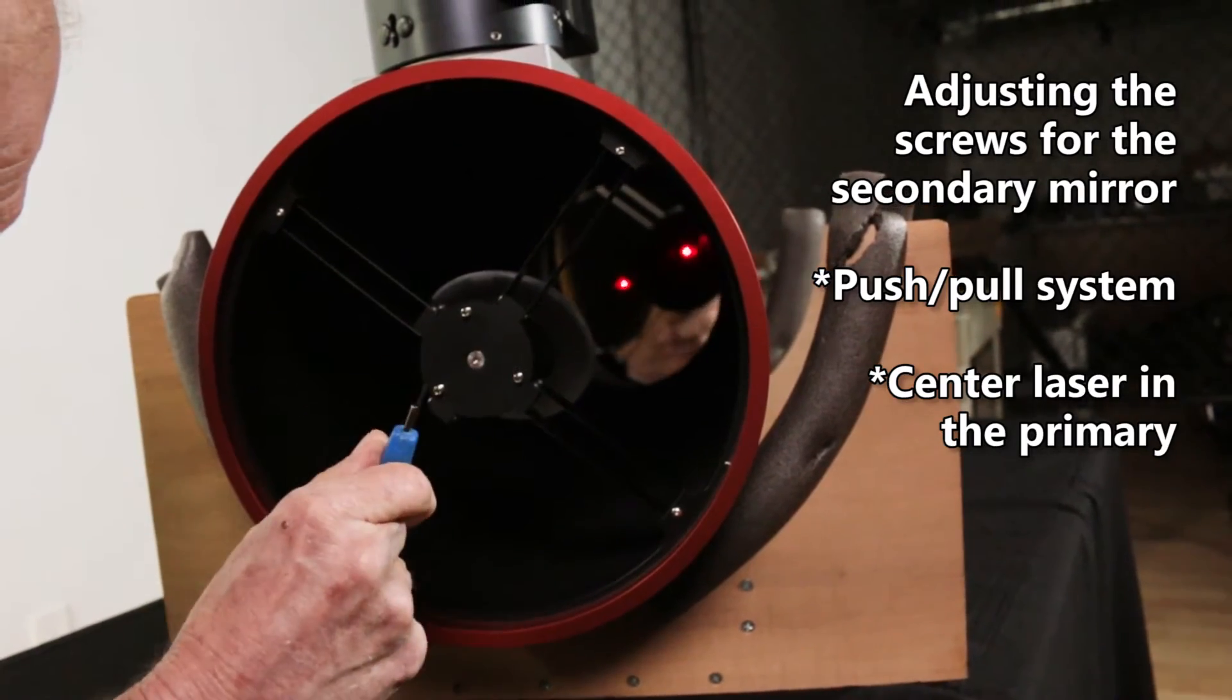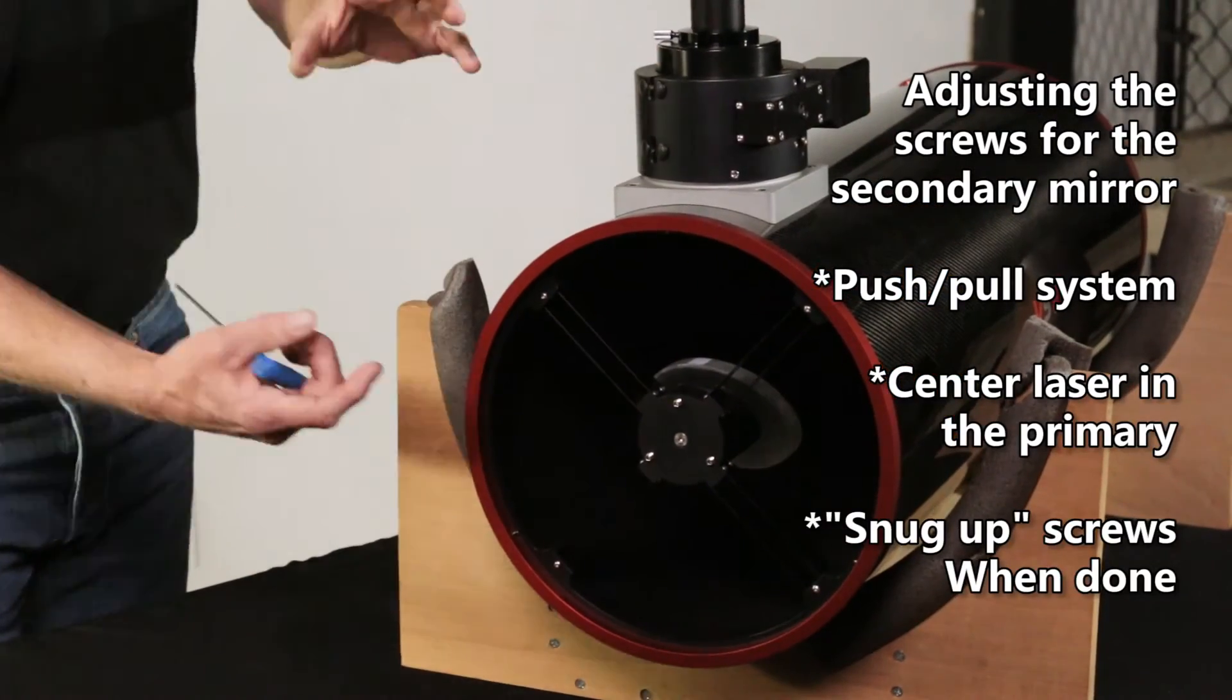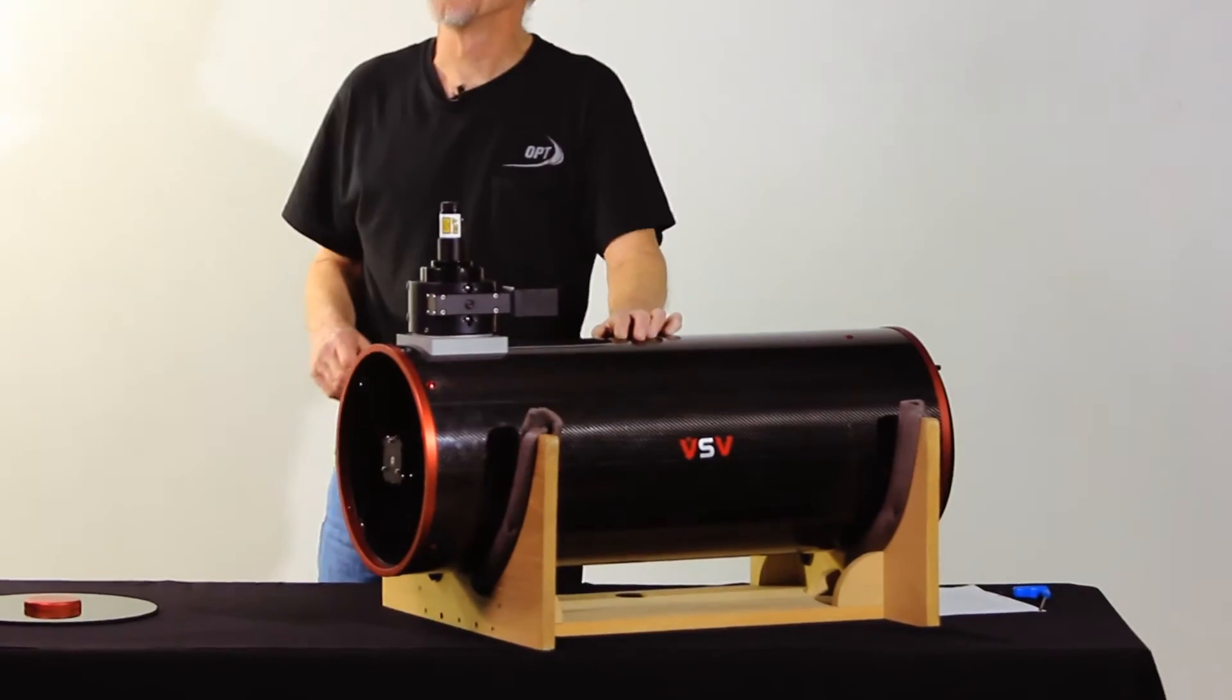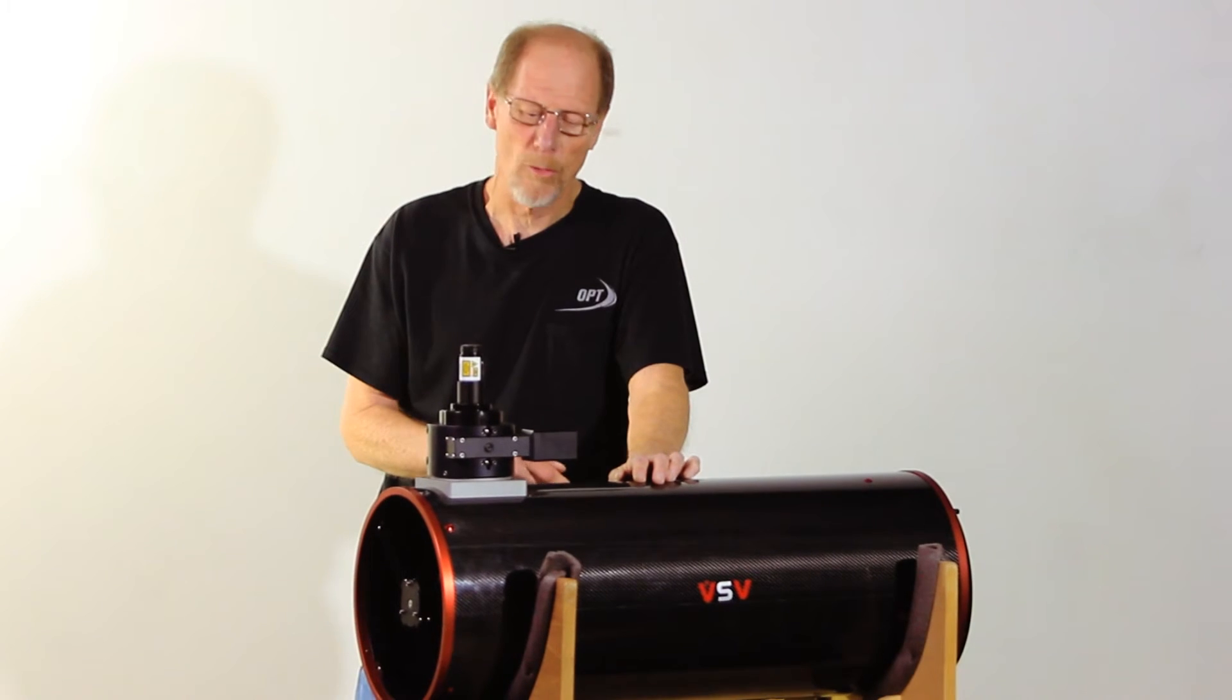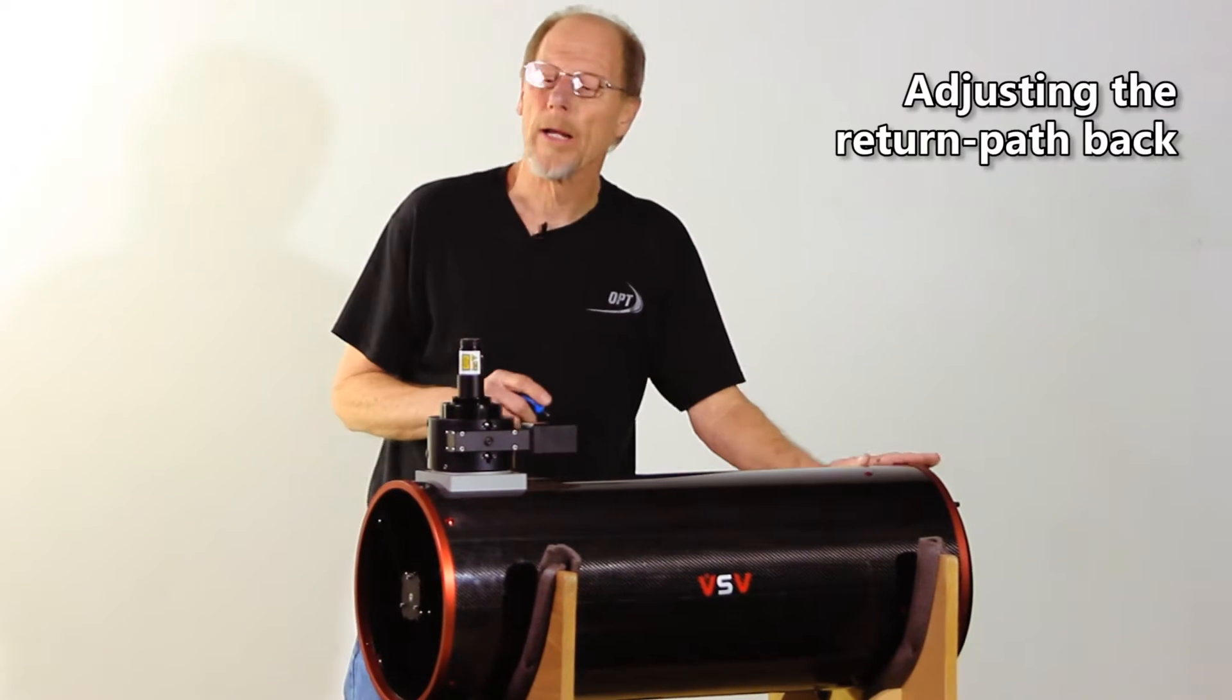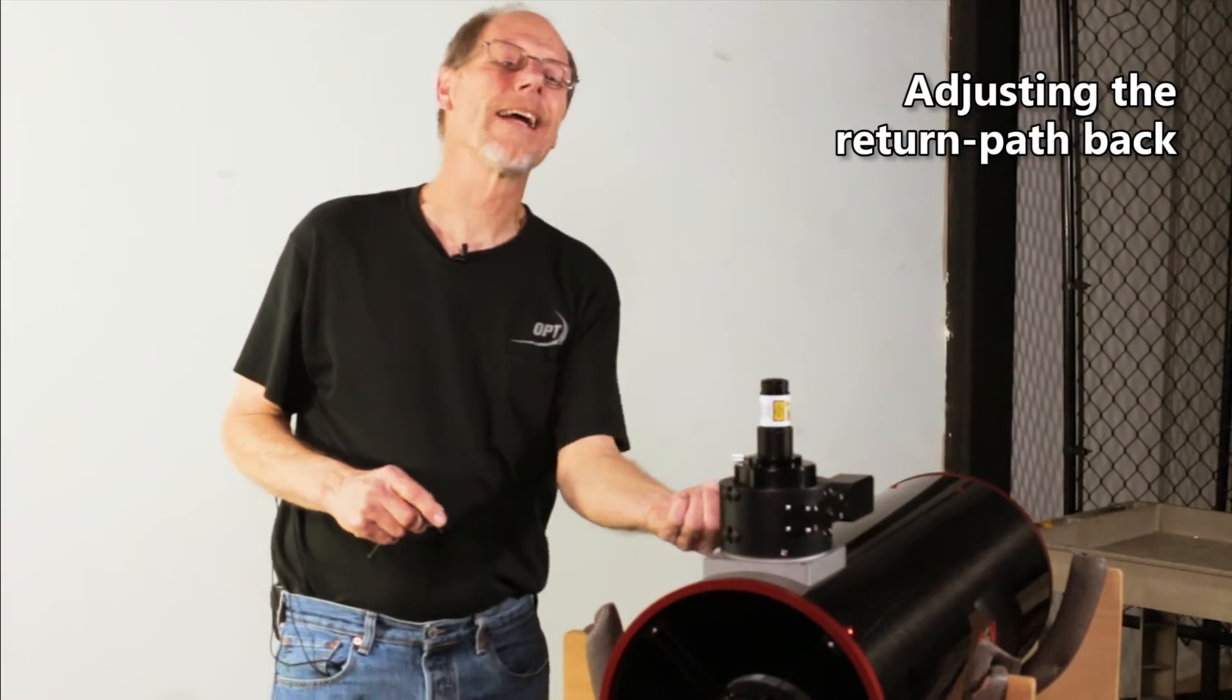And then you want to make sure that you go around and snug all these up. You don't want to over-tighten them, just snug them up against each other so that it won't move. Now we have the laser marked directly onto the primary mirror and we're ready to go to the primary and adjust the return path back through the laser.